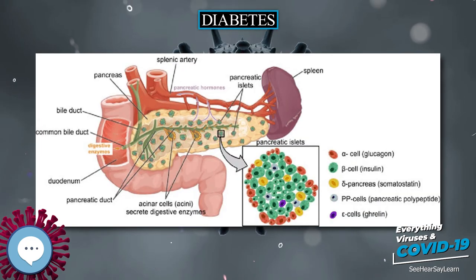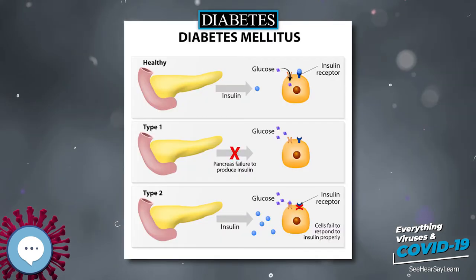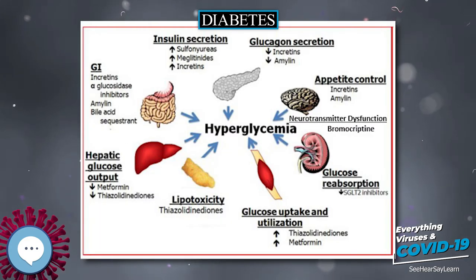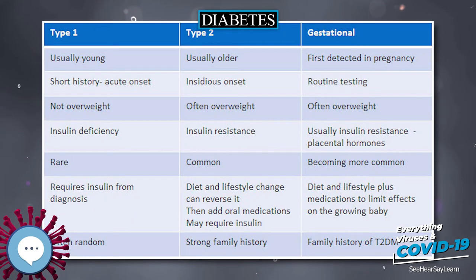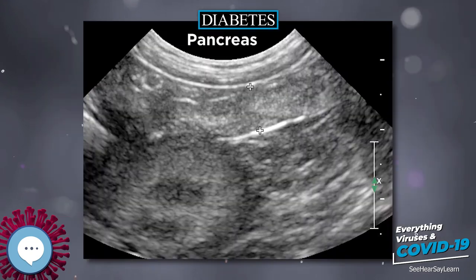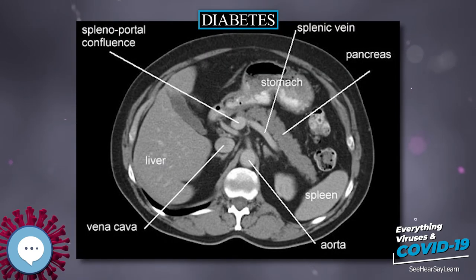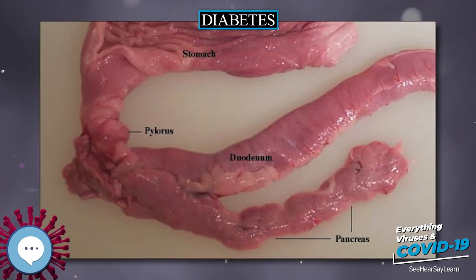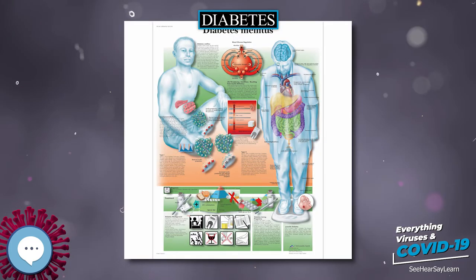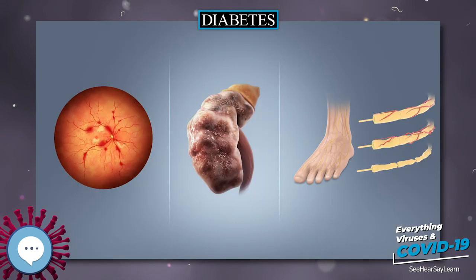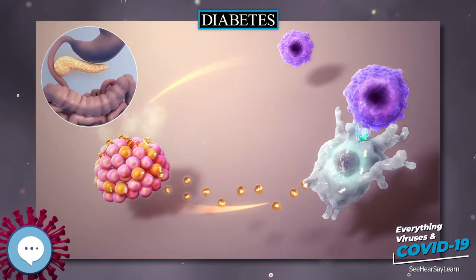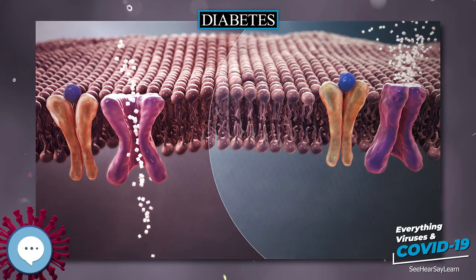Per the WHO, people with fasting glucose levels from 6.1 to 6.9 mmol/L are considered to have impaired fasting glucose. Levels above 7.8 mmol/L but not over 11.1 mmol/L two hours after a 75-gram oral glucose load are considered to have impaired glucose tolerance. Of these two pre-diabetic states, the latter in particular is a major risk factor for progression to full-blown diabetes mellitus, as well as cardiovascular disease. The American Diabetes Association (ADA) since 2003 uses a slightly different range for impaired fasting glucose of 5.6 to 6.9 mmol/L. Glycated hemoglobin is better than fasting glucose for determining risks of cardiovascular disease and death from any cause.